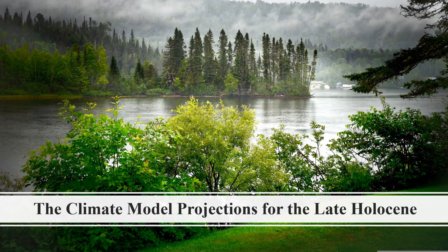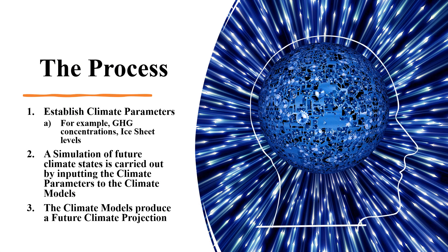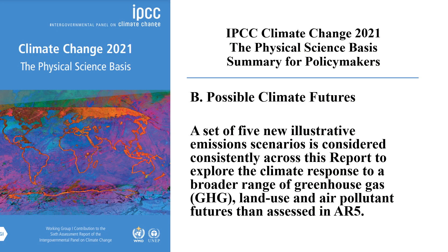To explain further, we need to discuss at a high level how climate models work. The high-level process starts with the selection of climate parameters believed to have existed at a particular time — such as greenhouse gas concentrations, ice sheet levels, and many more. A simulation of future climate states is carried out by inputting these climate parameters to the climate models, which then produce a future climate projection. Different parameters produce different projections, and this is what the IPCC did when they produced five projections based on five different scenarios.